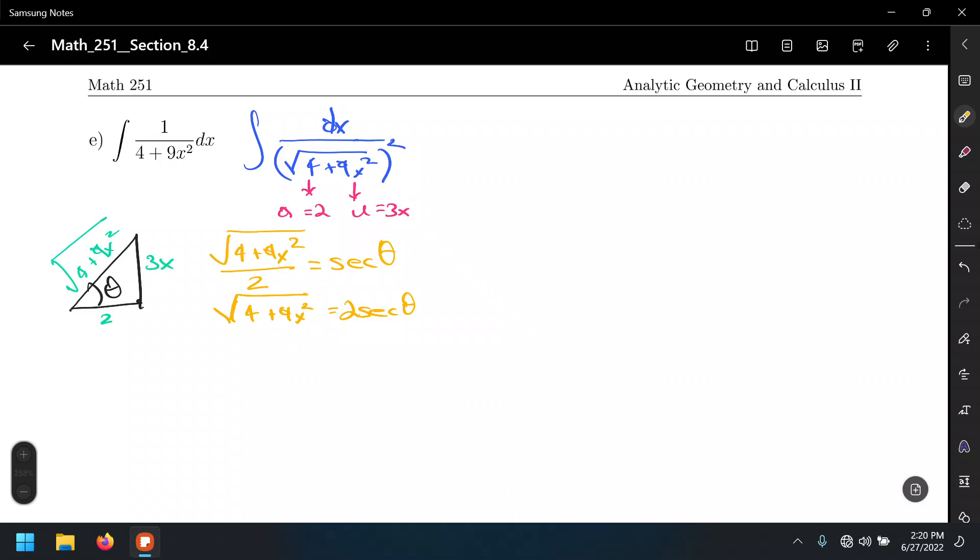And so we have a substitution for the radical factor. All right, okay, let's get a substitution so we can get the differential dx in terms of dθ. We need to relate the 3x with either the radical or the 2, but which of these two is easier? 3x over 2.